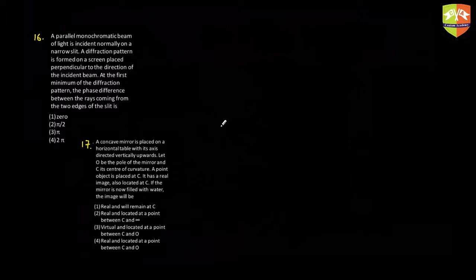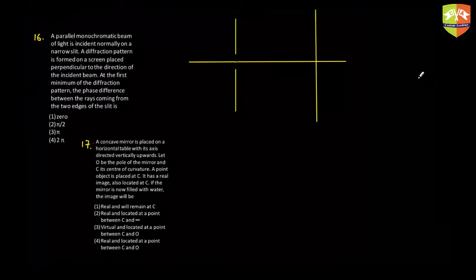Question 16: This is a single slit experiment. A parallel monochromatic beam of light is incident on a narrow slit, forming a diffraction pattern on a screen. We need to find the phase difference between rays coming from the two edges of the slit at the position of the first minimum of the diffraction pattern.